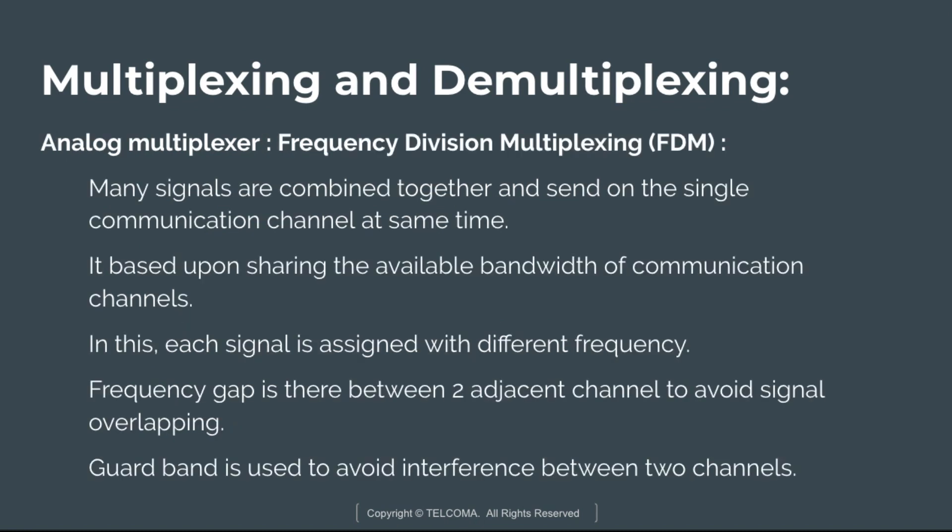Starting with Frequency Division Multiplexing — here many signals are combined together and sent on a single communication channel at the same time. It is based on sharing the available bandwidth of the communication channel. Each signal is assigned a different frequency, and these different-frequency signals are transmitted on a shared medium simultaneously. As they have different frequencies, they do not interfere with each other.